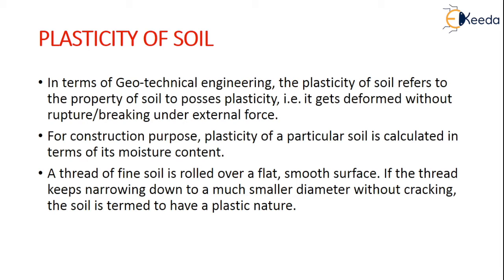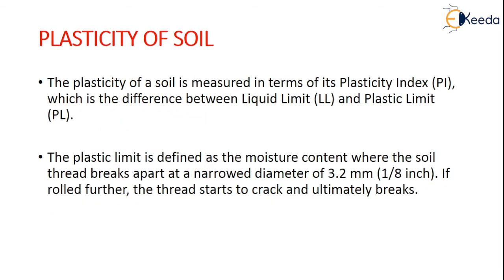Generally, a thread of fine soil is rolled over a flat or smooth surface. If that thread keeps narrowing down to a much smaller diameter without any cracking, then that soil is termed to have a plastic property or plastic nature. Generally, the plasticity of soil is measured in terms of its plasticity index, which is the difference between the liquid limit and the plastic limit. The plastic limit is defined as a moisture content where the soil thread breaks apart at a narrow diameter of 3.2 mm or 1.8 inch. If rolled further, the thread starts to crack and ultimately breaks.